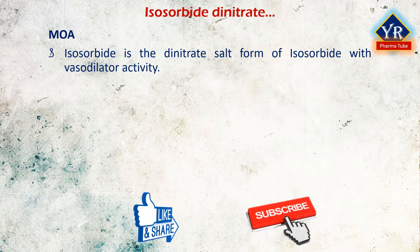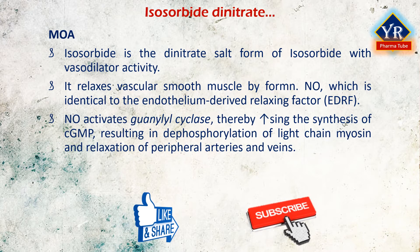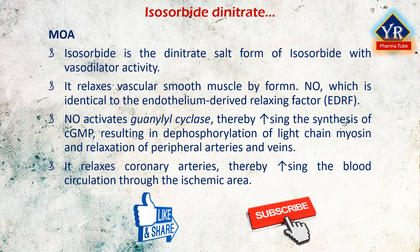Isosorbide dinitrate is the dinitrate salt form of isosorbide, an organic nitrate with vasodilator activity. It relaxes vascular smooth muscle by formation of free radical nitric oxide, which is identical to the endothelium-derived relaxing factor. Nitric oxide activates guanylyl cyclase enzyme, thereby increasing the synthesis of cGMP within smooth muscle, resulting in dephosphorylation of light chain myosin and relaxation of peripheral arteries and veins.